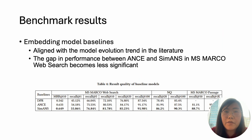Based on the MSMACO Web Search dataset, we raise three challenging tasks. The first is the large-scale embedding model challenge. We find that the ranking of the baseline models is aligned with the model evolution trend; nevertheless, the gap in performance between ANC and SIM-ANS becomes less significant.